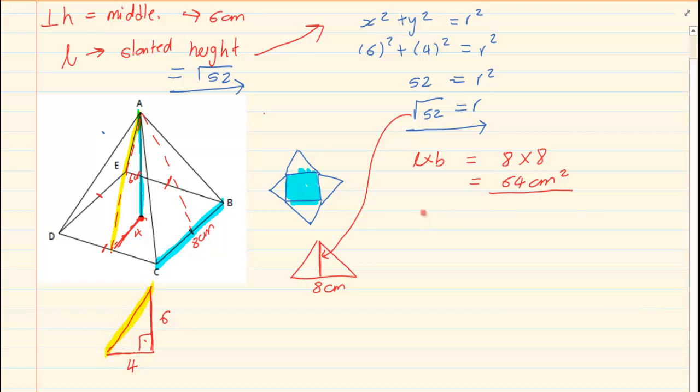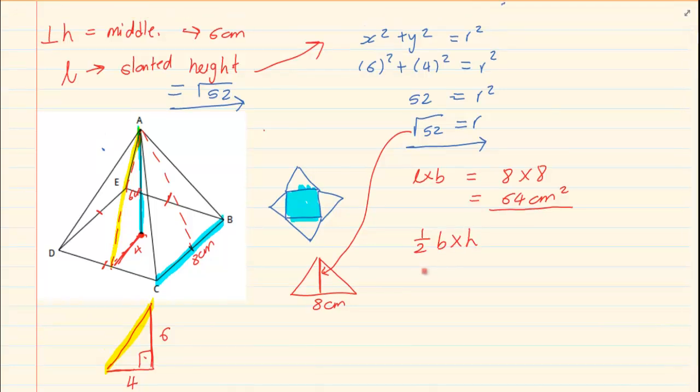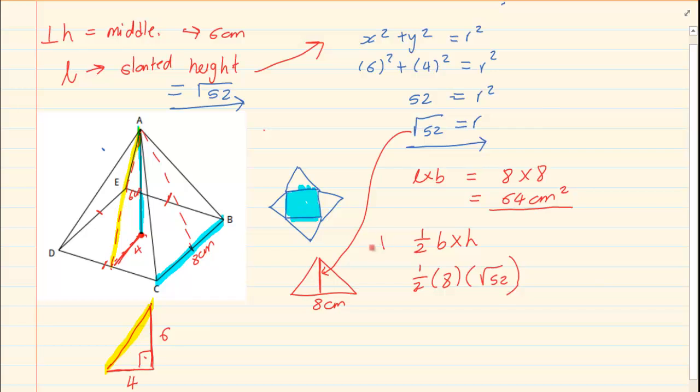So we know that the area is going to be half base times our height which is equal to half, our base is 8 and our height is going to be root of 52. But now the area of the triangle is half base times height. How many triangles do we have? We have 1, 2, 3, 4.